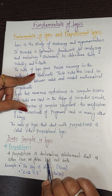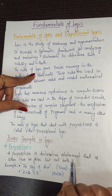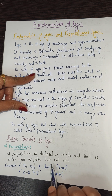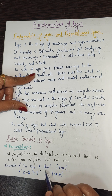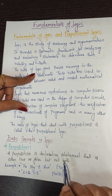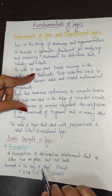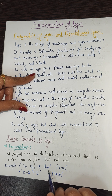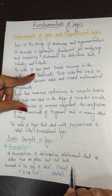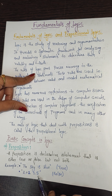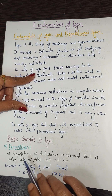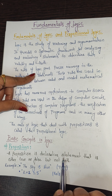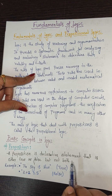For example, 'the sky is blue' is either true or false but not both — here it is a true statement. '2 plus 2 equals 5' is a false statement. So a proposition is a declarative statement that may be either true or false but not both.